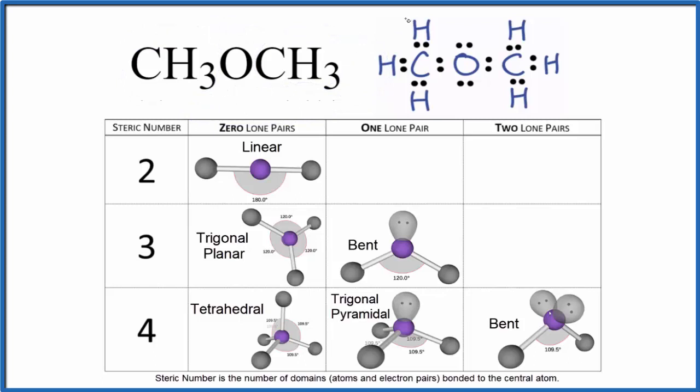We're going to look at this from the perspective of the central oxygen atom. There are two ways we can find the molecular geometry for dimethyl ether. First, we can look at the things bonded to this central oxygen and then use this table.